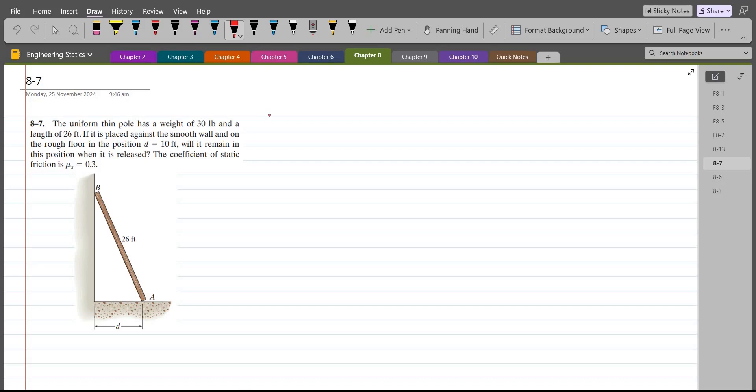So, we have to figure out whether there is sufficient friction to keep this pole in this position against the wall. Now, to solve this problem, first of all, we have to consider this condition.